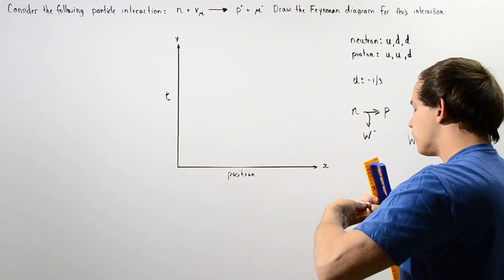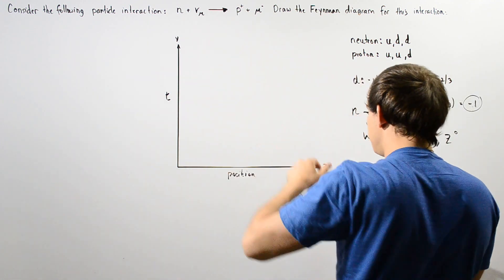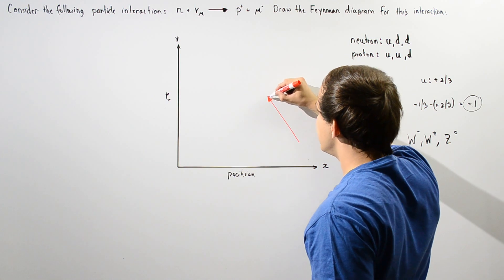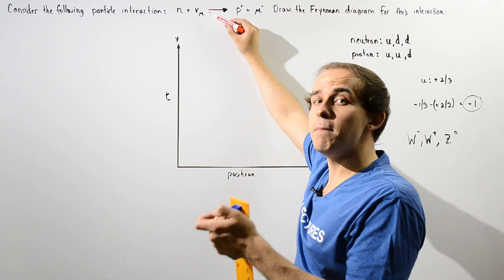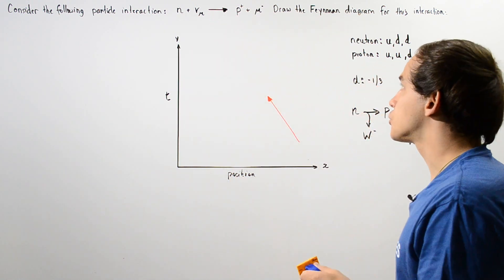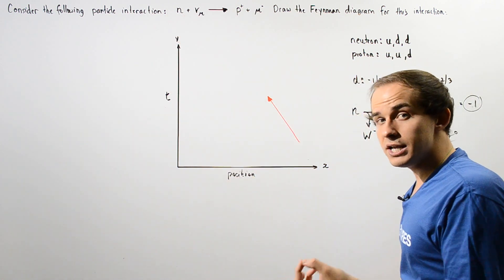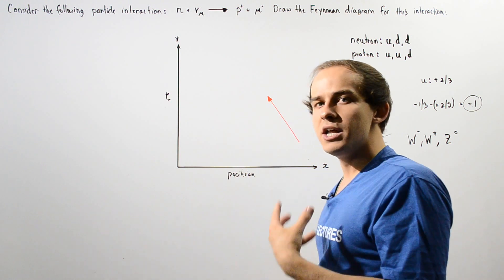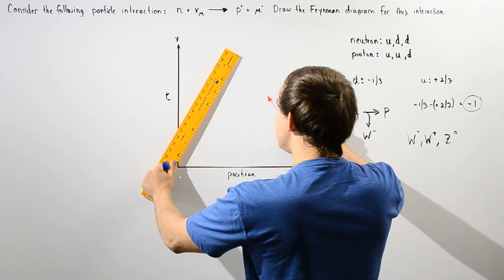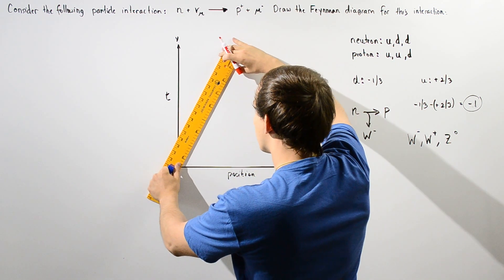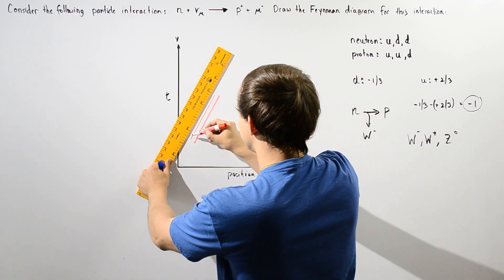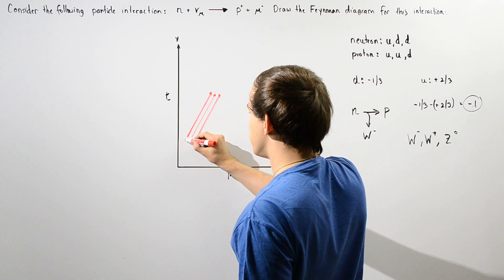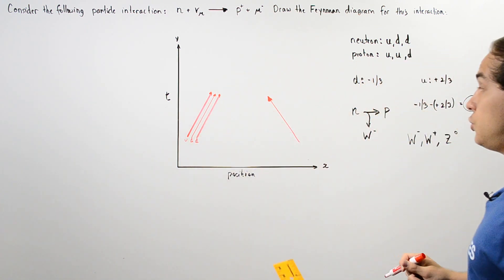We have on one side our neutron interacting with our muon neutrino, approaching one another from two sides. On this side we have the muon neutrino approaching, designated with a single line, because the muon neutrino is a fundamental particle with no internal structure. However, the neutron is a baryon consisting of three quarks, so to represent it we use three arrows — each arrow representing one quark: the up quark, the down quark, and the down quark. This is our neutron.